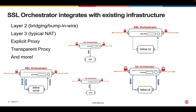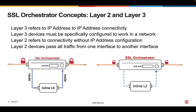SSL Orchestrator integrates easily with your existing network infrastructure, whether it's with devices that are layer 2, layer 3, explicit and transparent proxies, and more. Layer 3 devices support logical routing and IP address to IP address connectivity. Layer 2 devices do not route traffic by IP address; instead, traffic is passed or bridged from one interface to the other.